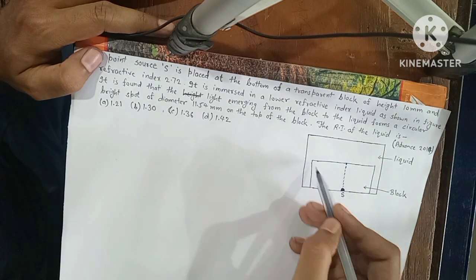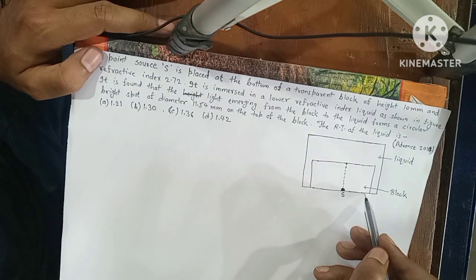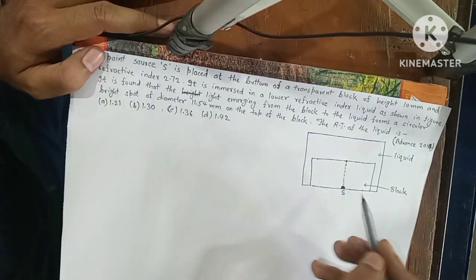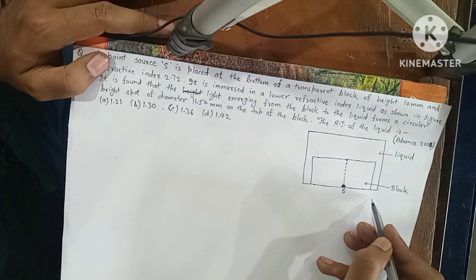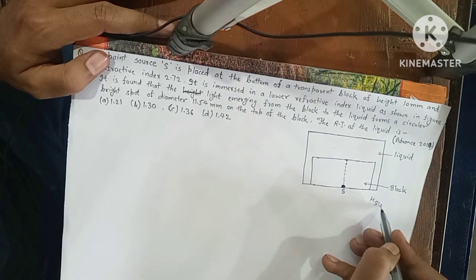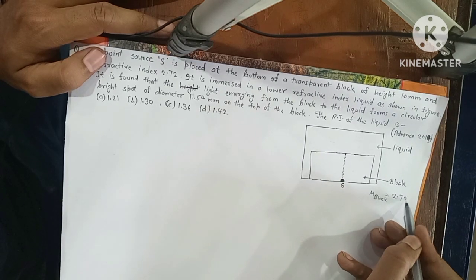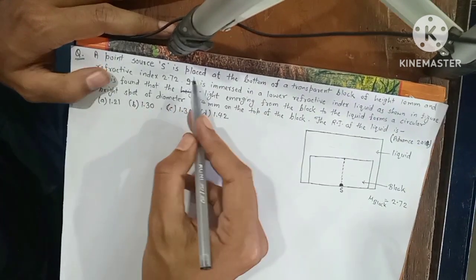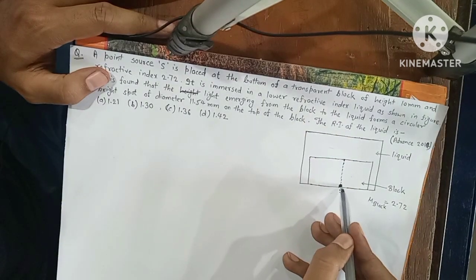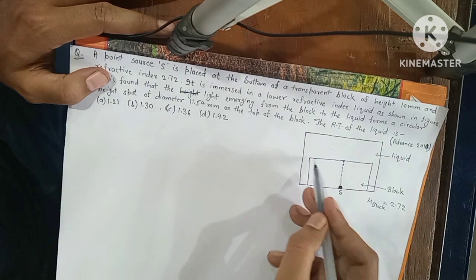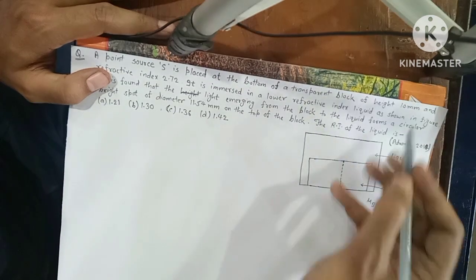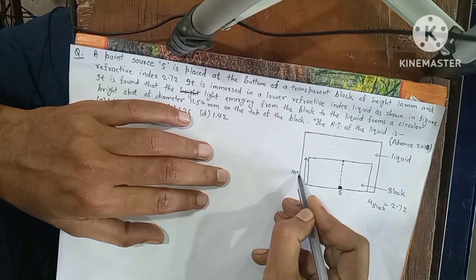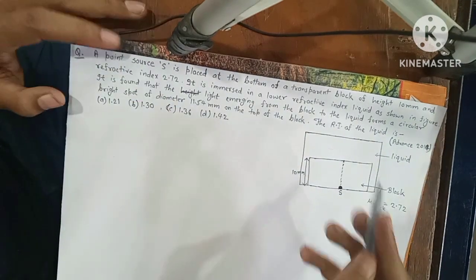This is a block which is immersed in the liquid. The refractive index of the block is given as 2.72. The point source S is placed at the bottom of the transparent block. Its height is 10 mm — from here to here. The point source is placed at the bottom.